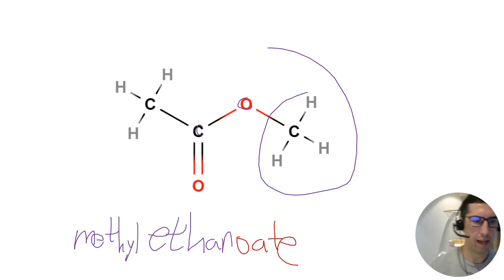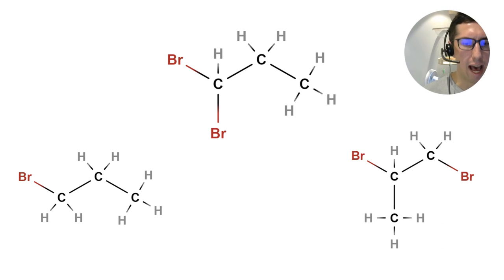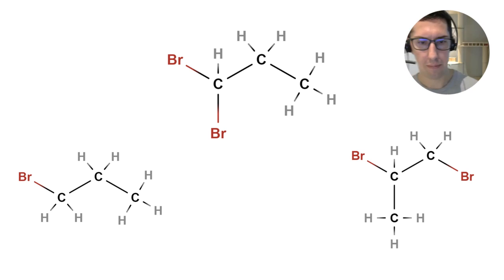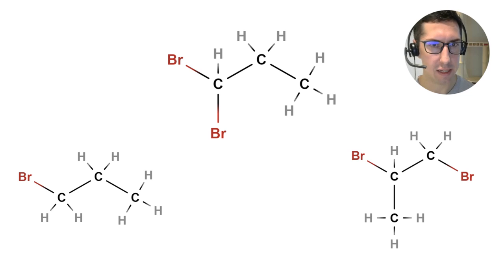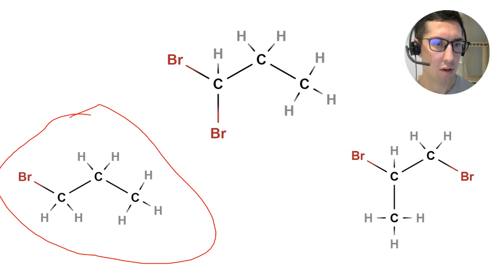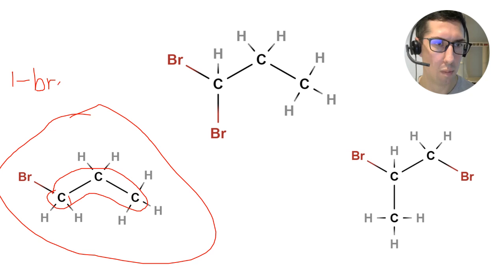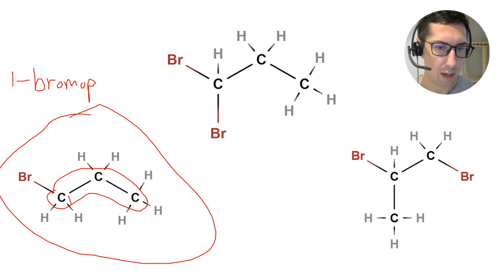The final topic is naming halogens attached to organic molecules. Halogens are named as prefixes: fluorine becomes fluoro, chlorine becomes chloro, bromine becomes bromo, iodine becomes iodo. For example, a bromine on carbon one of propane is called 1-bromopropane. If the bromine were on the middle carbon, it would be 2-bromopropane.